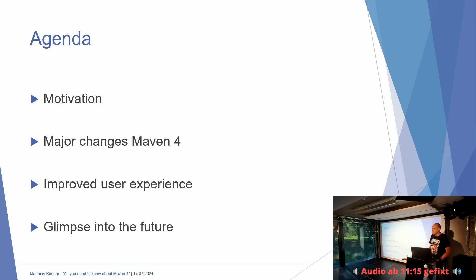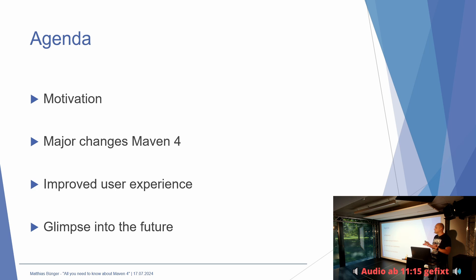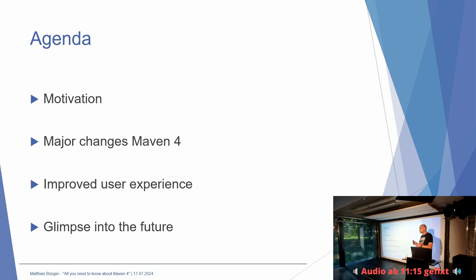Worum soll es heute gehen? Maven 4 wird hoffentlich nächstes Jahr kommen. Ein bisschen Motivation, warum Maven 4, obwohl 3.9 schon ganz lange da ist und irgendwie gut funktioniert. Dann die Major Changes in Maven 4, also was wirklich grundlegend ist, möglicherweise auch Breaking Changes. Und dann verschiedene kleinere Sachen, die ich unter der Schrift 'User Experience' zusammengefasst habe. Und dann ein Blick in die Zukunft, was kommen könnte.